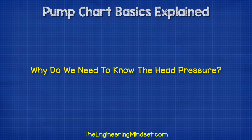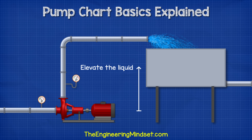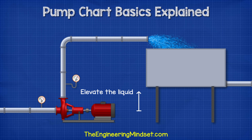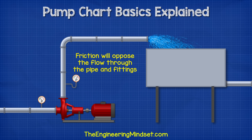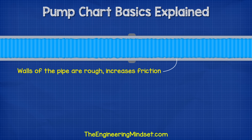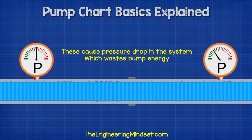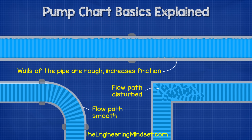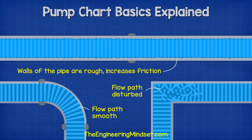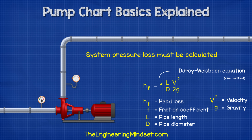Why do we need to know head pressure? Pumps are usually used to move liquid to a higher region, so we need to ensure the pump can reach this elevation. As we pump liquid through the pipes and the fittings, friction will try to oppose the flow. This occurs from the walls of the pipe, but also disturbances to the flow path — this causes pressure losses which wastes energy from the pump. The amount of friction depends on the liquid type as well as the materials and fittings used. Therefore, we must calculate how much friction or pressure loss our system will generate and ensure that the pump we select can overcome this.